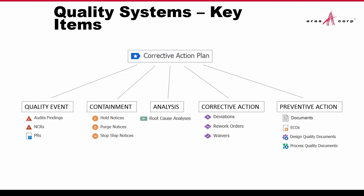If it's a really big problem, you need to not send the product to a customer. Root cause analysis is one of the cornerstones of the quality system tool — to dig in and find out what the problems are. Corrective action capability includes finding those deviations, rework orders, and waivers. And on the preventive side, putting together documents that note everything, and engineering change orders to put changes in place to fix whatever the problems might have been.